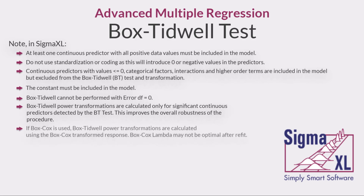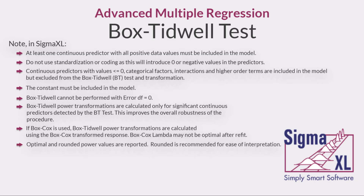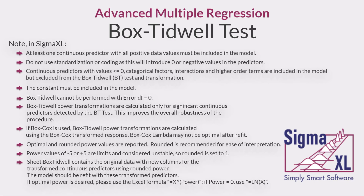If BoxCox is used, Box-Tidwell power transformations are calculated using the BoxCox transformed response. BoxCox lambda may not be optimal after refit. Optimal and rounded power values are reported; rounded is recommended for ease of interpretation. Power values of minus 5 or plus 5 are limits and considered unstable, so rounded is set to 1. Sheet BoxTidwell contains the original data with new columns for the transformed continuous predictors using rounded power. The model should be refit with these transformed predictors.